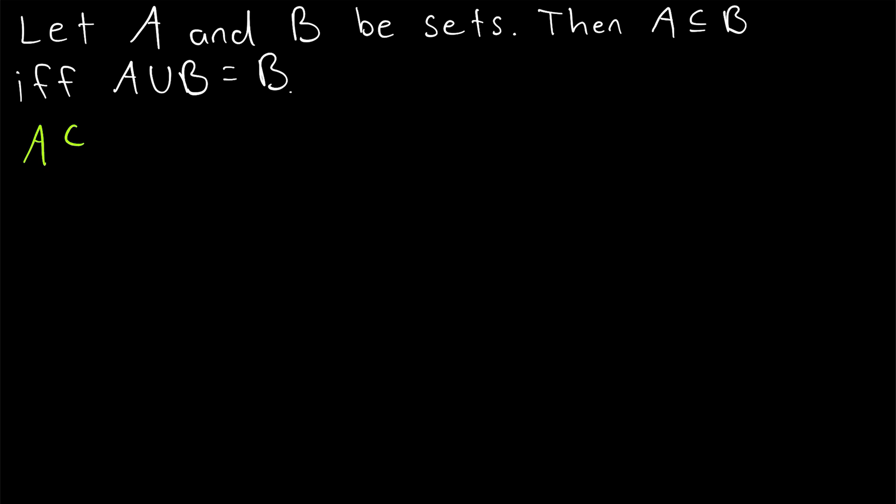So we're going to begin by assuming that our set A is a subset of B, and we want to show that A union B equals B. To show this, we need to show that A union B is a subset of B, and B is a subset of A union B. First, let's prove that A union B is a subset of B.